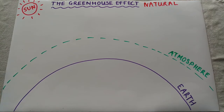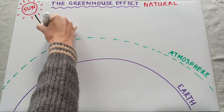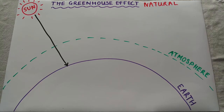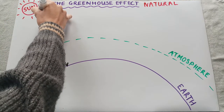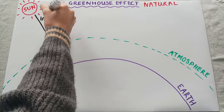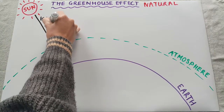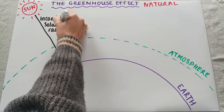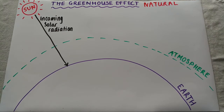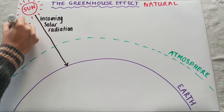To begin with, we have incoming solar radiation from the sun coming towards the earth. Those of you that do geography will probably know it as insolation — that is short for incoming solar radiation. The key thing about solar radiation is that it is short wave radiation.